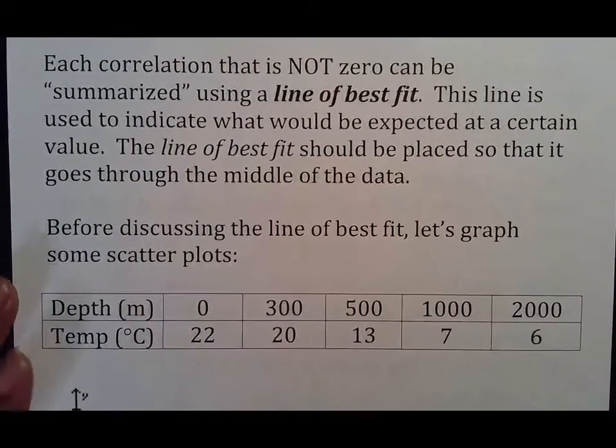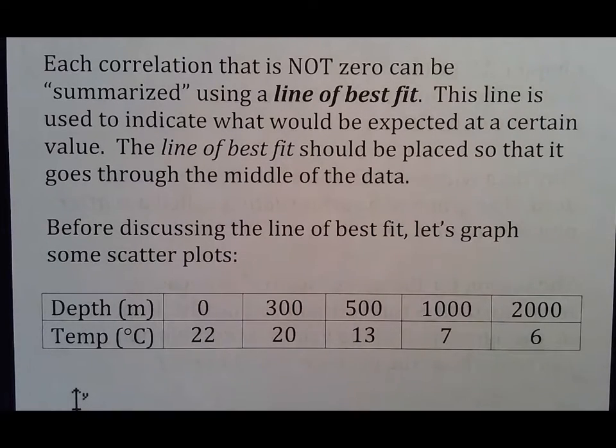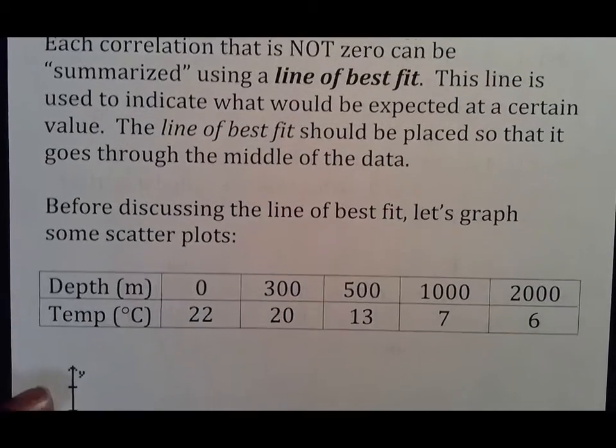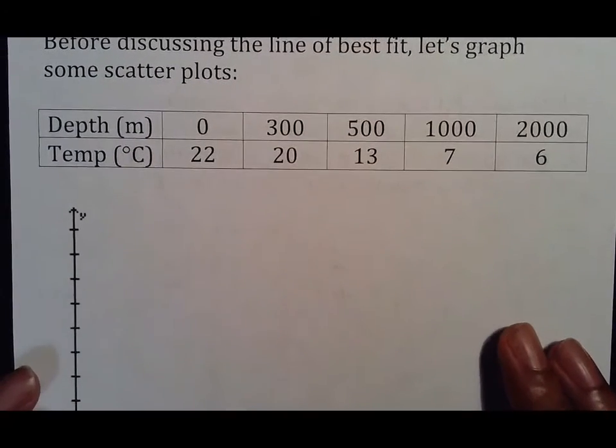For example, r of negative one will look almost like that, r of a positive one will look something like that because it's straight, but the more wide the information is, the more close to zero you get. Each correlation that is not zero can be summarized using a line of best fit. This line is used to indicate what would be expected at a certain value. The line of best fit should be placed so it goes through the middle of the data in the graph.